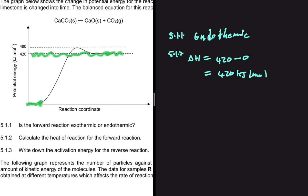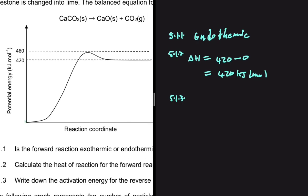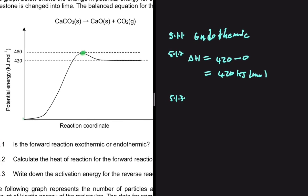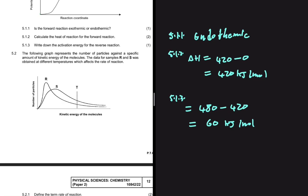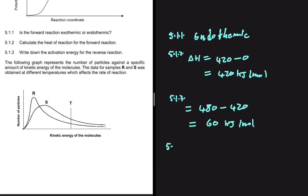That is the answer to 5.1.2. For 5.1.3, we need the activation energy for the reverse reaction. The activation energy for the reverse reaction is the peak energy of 480 kilojoules per mole minus the potential energy of the reactants for the reverse reaction, which is 420 kilojoules per mole. So the activation energy equals 480 minus 420, which is 60 kilojoules per mole. That is the answer to 5.1.3.